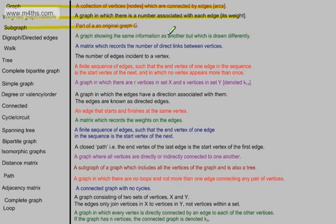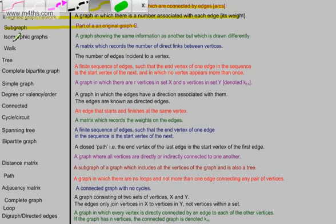A graph showing the same information as another, but which is drawn differently. We call these isomorphic graphs. So let's go ahead and put that in place, an isomorphic graph. So for example, we might have a circular graph, we might have a rectangular graph, we might have some cycle. Essentially, these are showing the same information, they are just drawn differently.